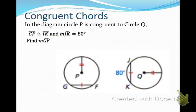Let's use some of these things now. In this diagram, circle P is congruent to circle Q, so we have two congruent circles. I know that chord GF is congruent to chord JK, and the measure of arc JK is 80 degrees. I want you to find the measure of arc GF. Since their chords are congruent and they're in congruent circles, arc GF has to be 80 degrees as well.